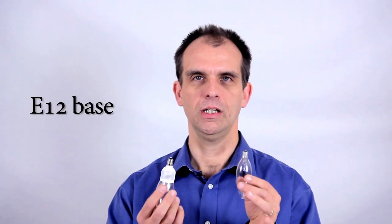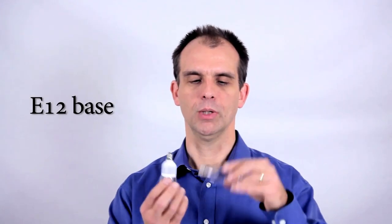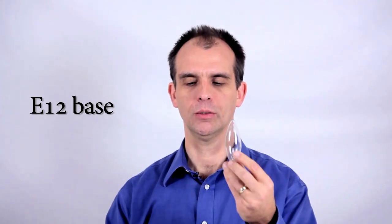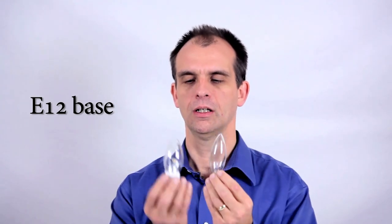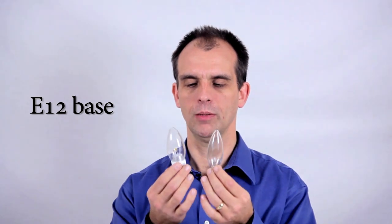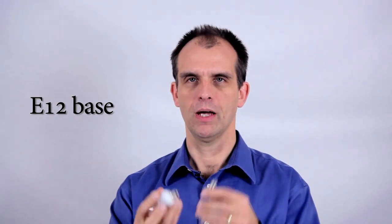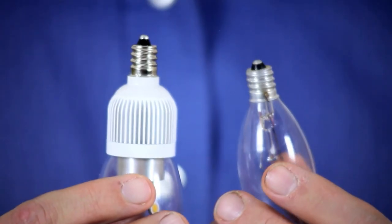And smaller than that and more common is the E12 base chandelier bulb. Incandescent 40 watt chandelier bulb and our LED 5 watt chandelier bulb emitting the same light with compatible E12 bases. You may also find E11 bases, but again, they are compatible.